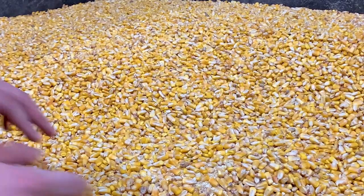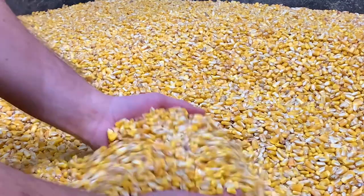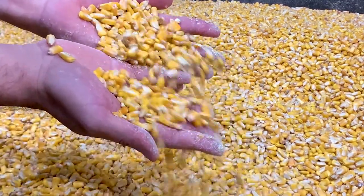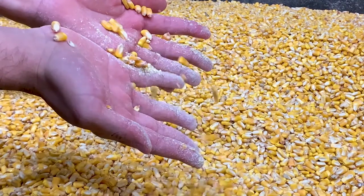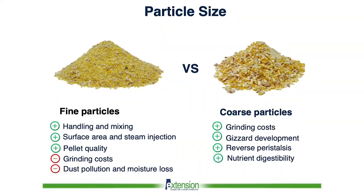The majority of feed ingredients used in poultry feeds require some type of grinding. Cereal grains such as corn and wheat are ground at the feed mill, while other ingredients are received in a ground form. Grinding is the first stage in feed manufacturing prior to batching and mixing. Particle size reduction during grinding increases handling, reduces ingredient segregation after mixing, and increases the surface area of the feed particles, which improves steam penetration during conditioning and particle agglomeration during pelleting.